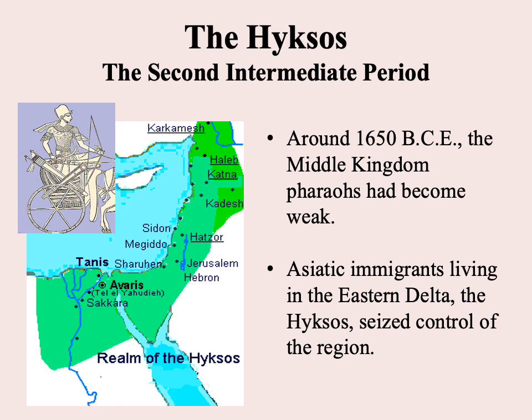We don't know a lot about the Hyksos. They were an Asiatic people who had at some point started settling in the eastern delta of the Nile — that triangular area where the Nile empties into the Mediterranean — and from there eventually seized control of all of ancient Egypt.